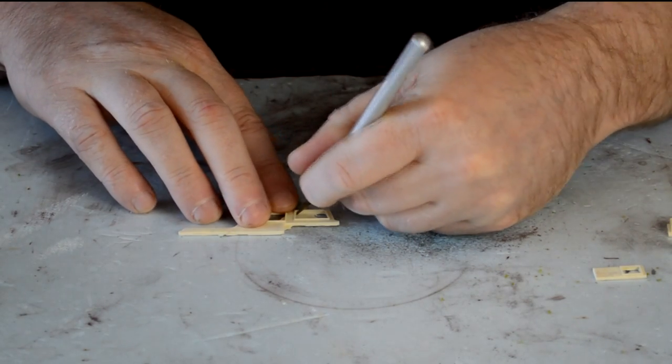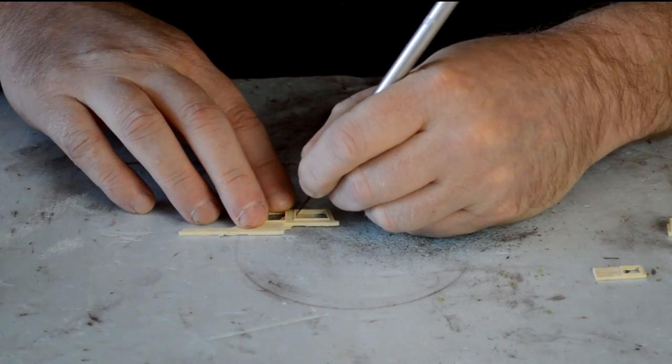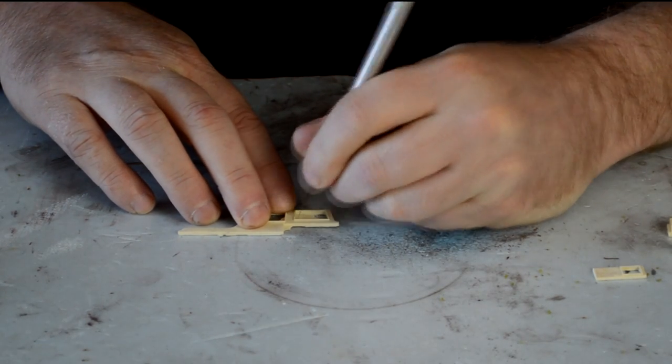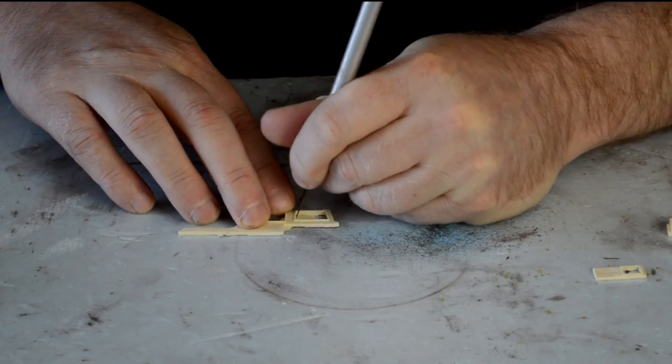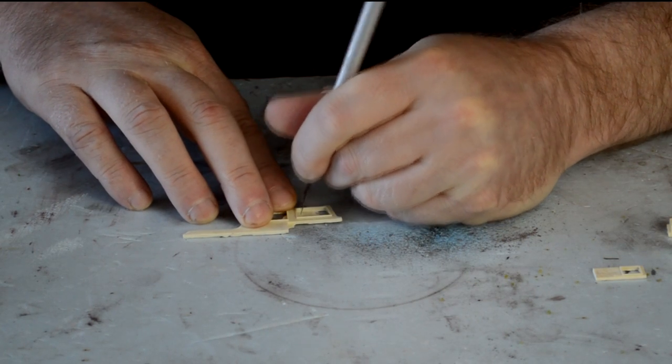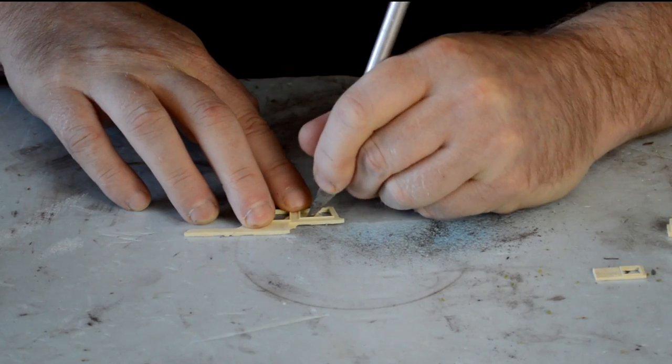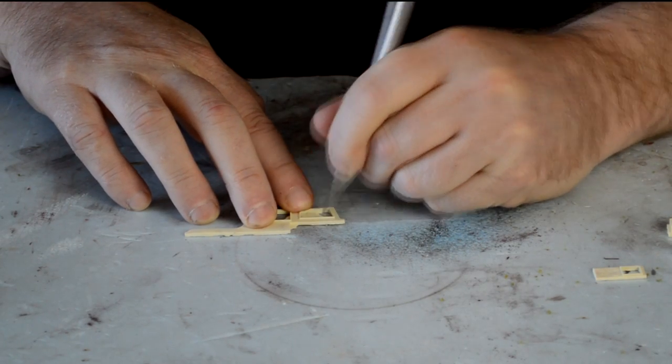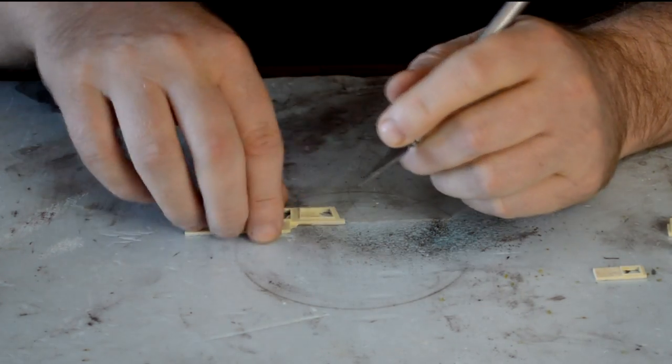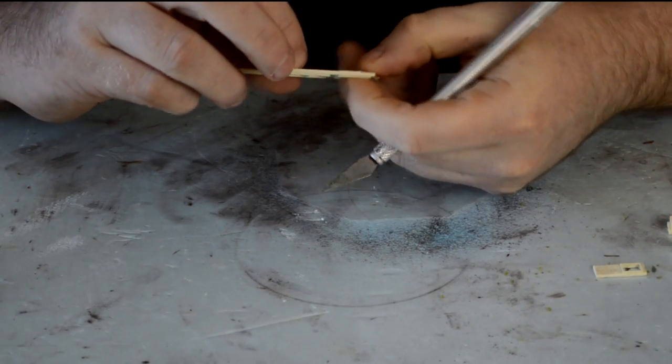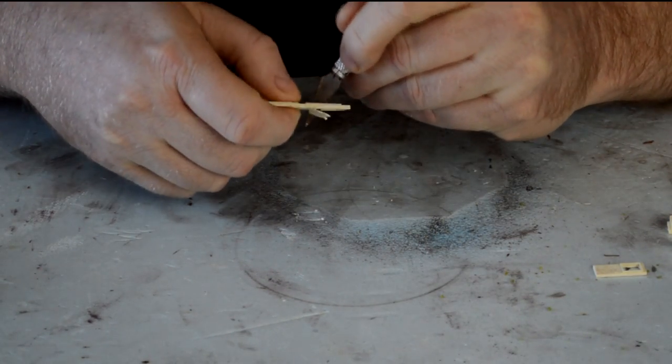Most of the time, poured resin comes with flashing. So I'm using my number 11 razor blade to cut away this flashing. Usually, the flashing is at the back of the part, so you can scrape it away without worry of cutting away details.